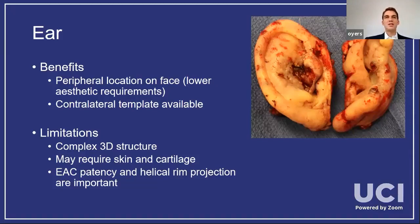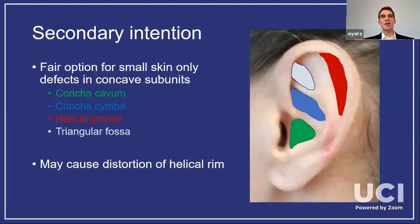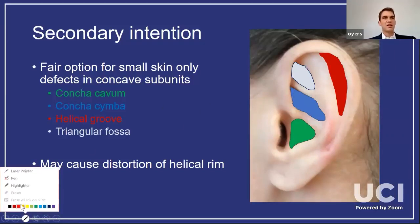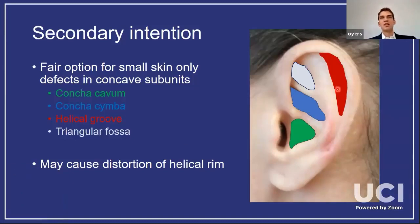Ears are very difficult to reconstruct because they're a strange, complex, three-dimensional shape — cartilage and skin projecting off the side of the head. You may need to rebuild skin, cartilage, or both, while keeping the external auditory canal open. Secondary intention is, at best, a fair option for some very small skin-only superficial defects, primarily in the concave subunits of the ear. The biggest problem is scar contraction.